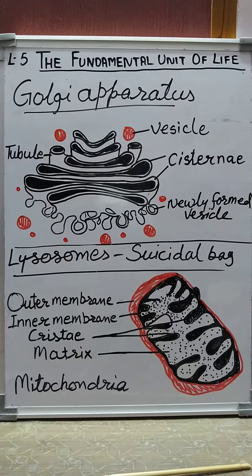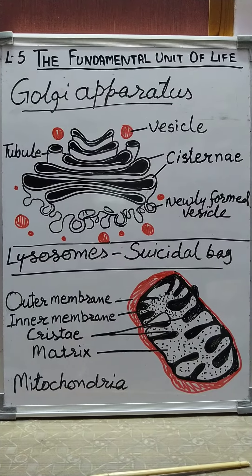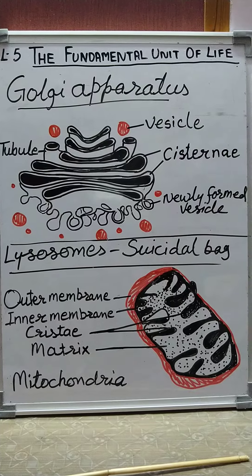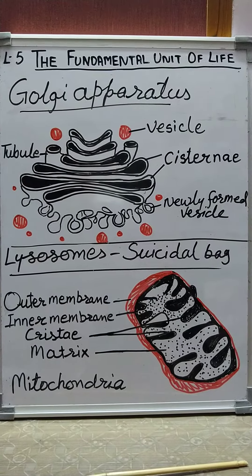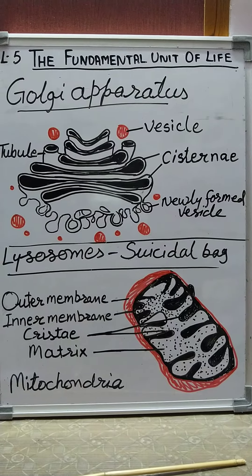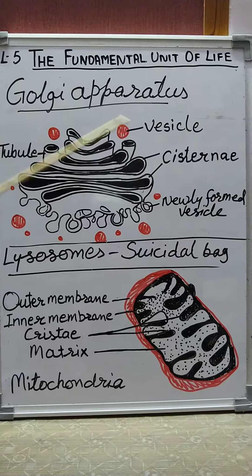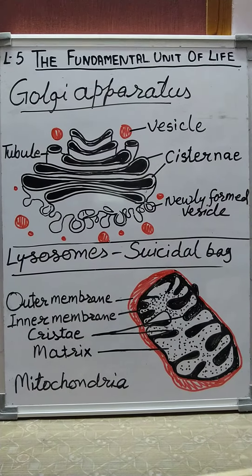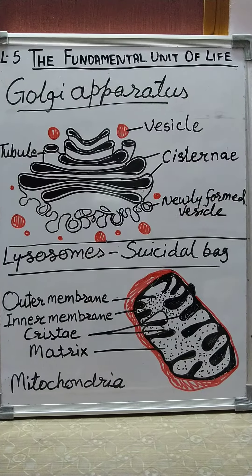The other functions of the Golgi apparatus are synthesis of the cell wall, plasma membrane, and lysosome. It also converts complex sugars into simple sugars. In animal cells, the Golgi apparatus is well defined, but in plant cells it is not well defined and is called dictyosomes.